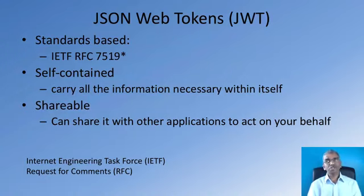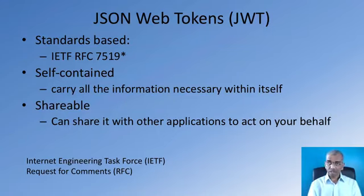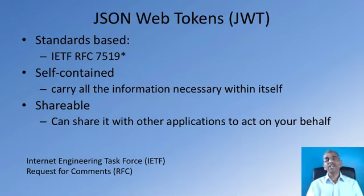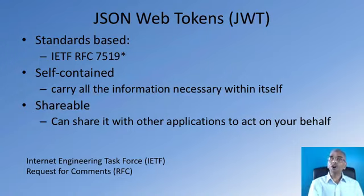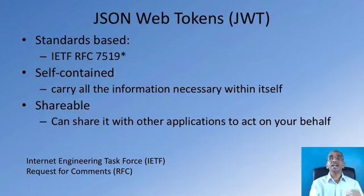The JsonWebToken is a self-contained token — it carries all the information within itself that is necessary to identify the user. A JsonWebToken can also be shared between two applications. For example, one application that has authenticated and obtained a JsonWebToken can pass it to another application that it is willing to authorize to access the server on its behalf. This sharing of the token is done in a secure manner, whereby authorization is transferred to a second application, which can then communicate with the server on behalf of the first application.